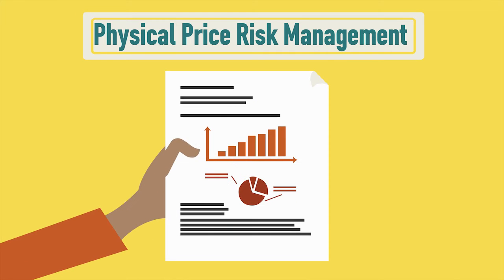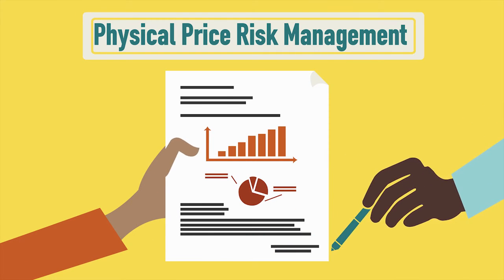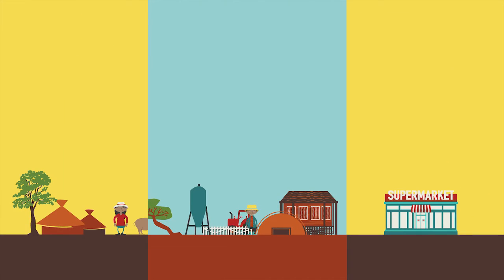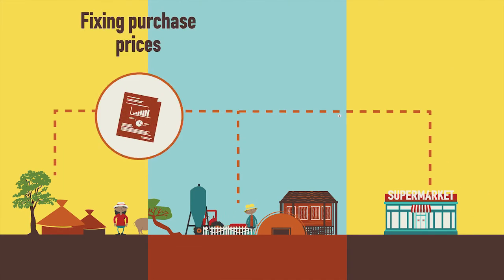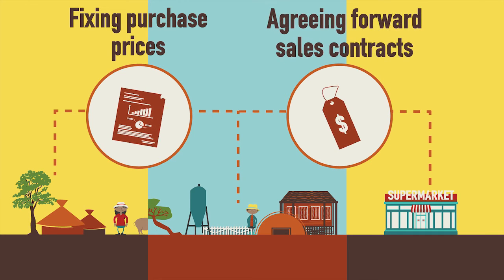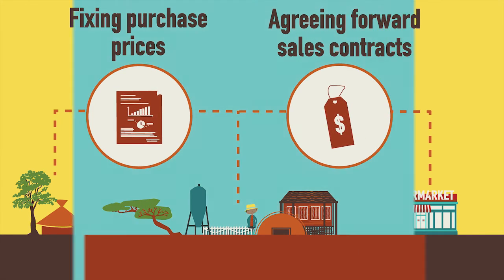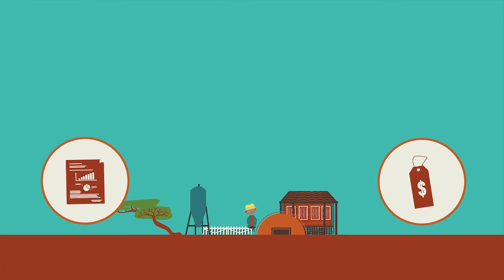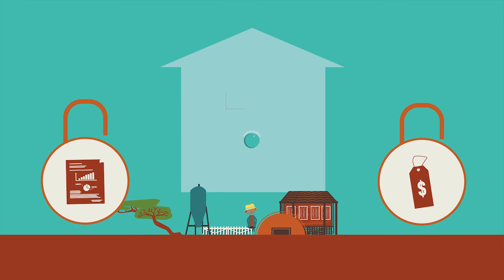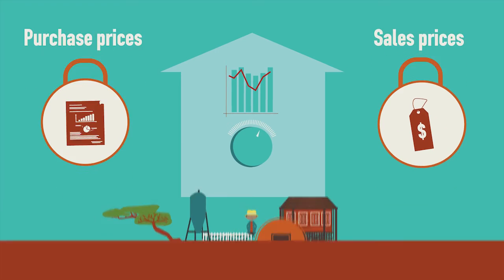Physical price risk management means using physical contracting processes to manage exposure to price risk. This might involve the agribusiness fixing purchase prices with farmers at the same time they are agreeing forward sales contracts with their buyers, removing their exposure to price movements by locking in both purchase and sales prices at the same time.